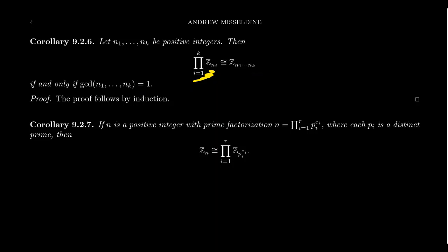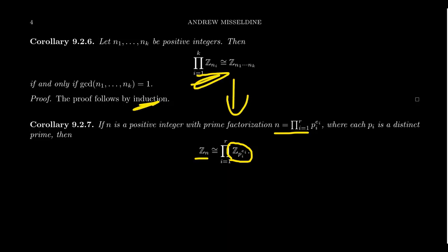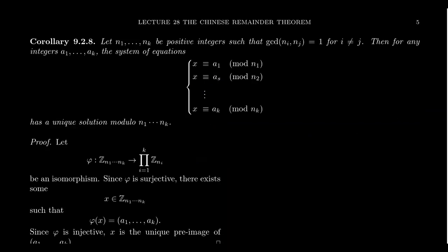Additionally, if you have a prime factorization of an integer N, then the cyclic group ZN has a natural decomposition as a direct product of cyclic groups of prime power orders. This is also an immediate consequence of the previous corollary by induction following from the Chinese Remainder Theorem.